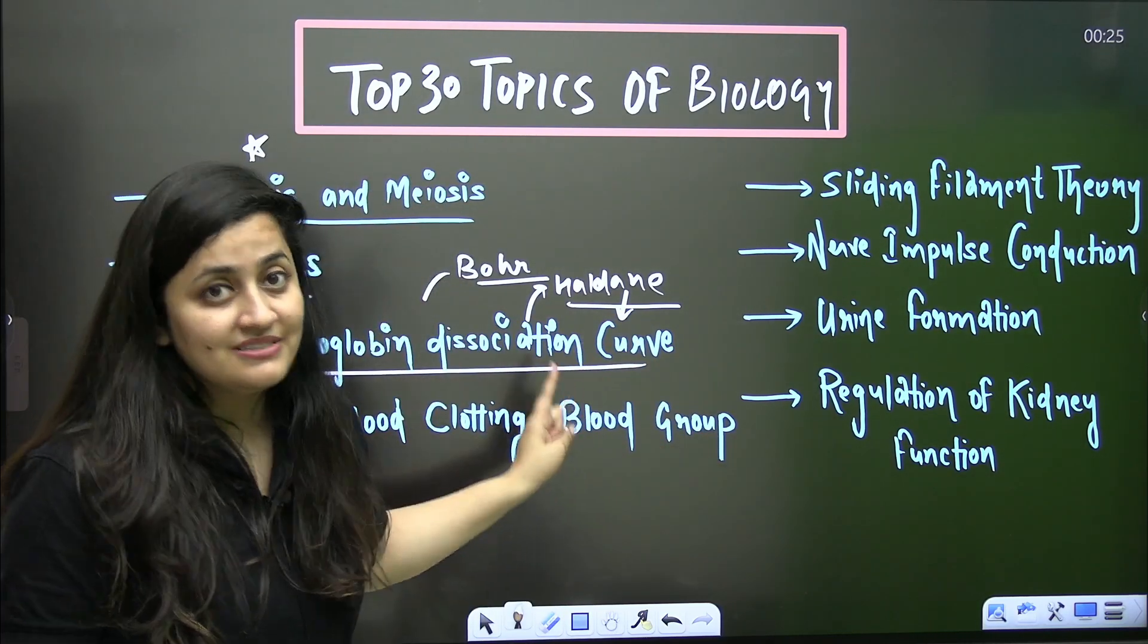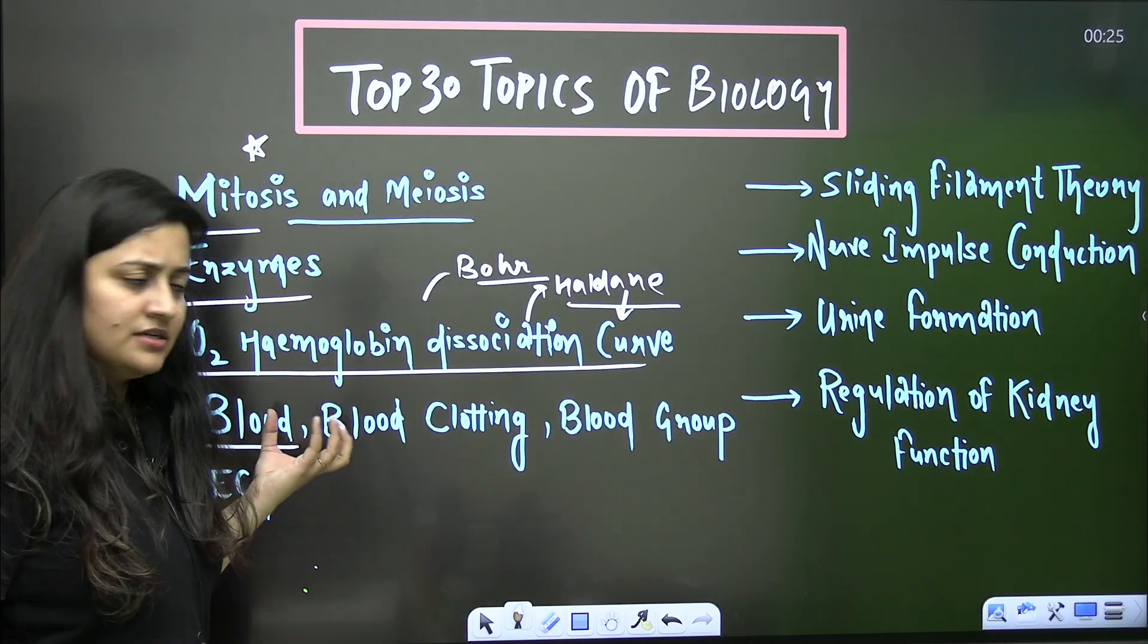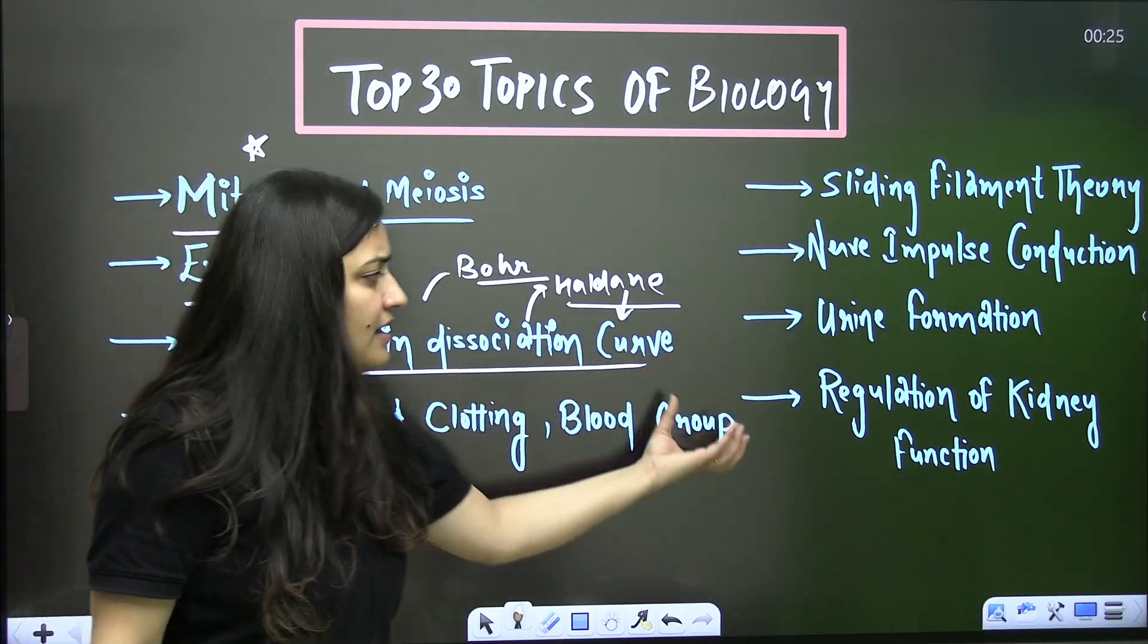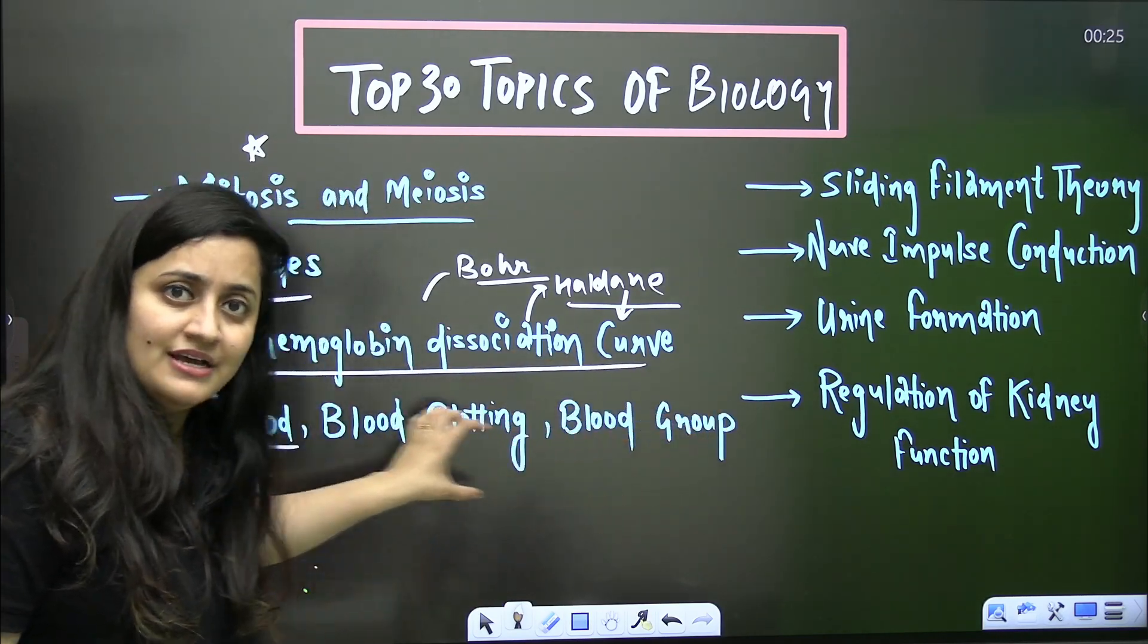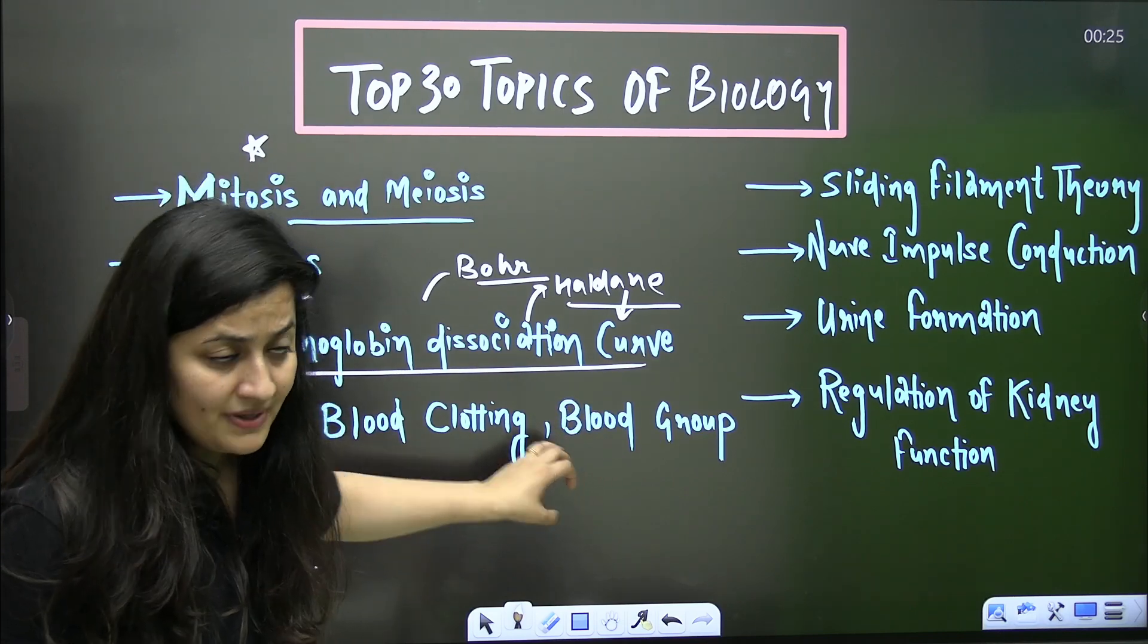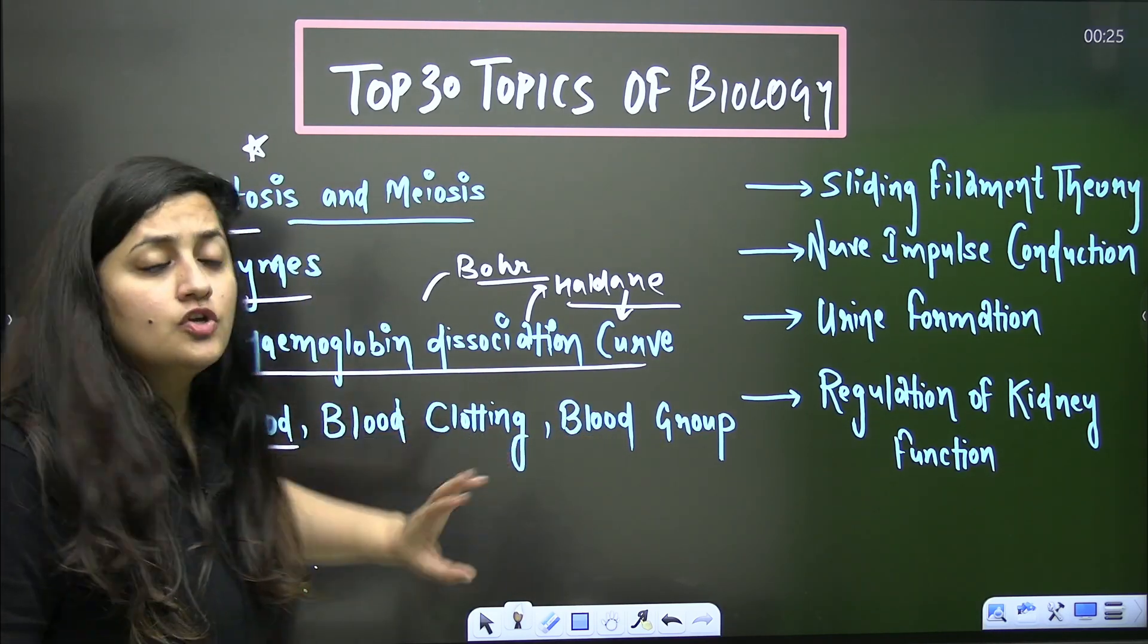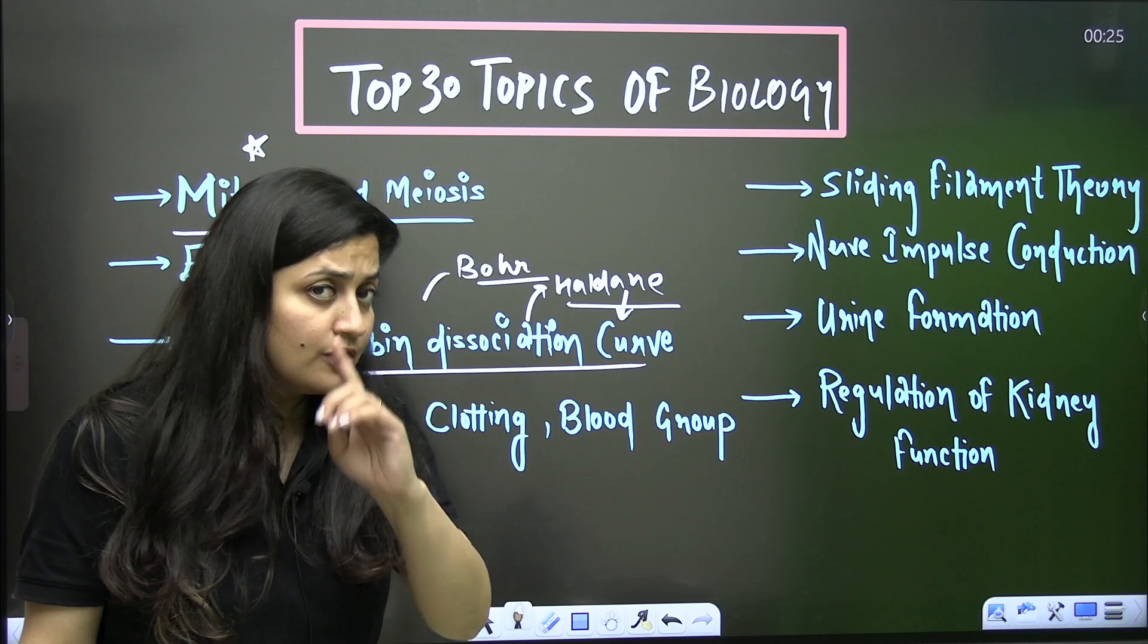Now from blood - blood clotting and blood group. This is a very simple topic and you should do it all together, right? And it is also one of the most important topics. Again from this part you guys can expect two to three questions in your final NEET examination.